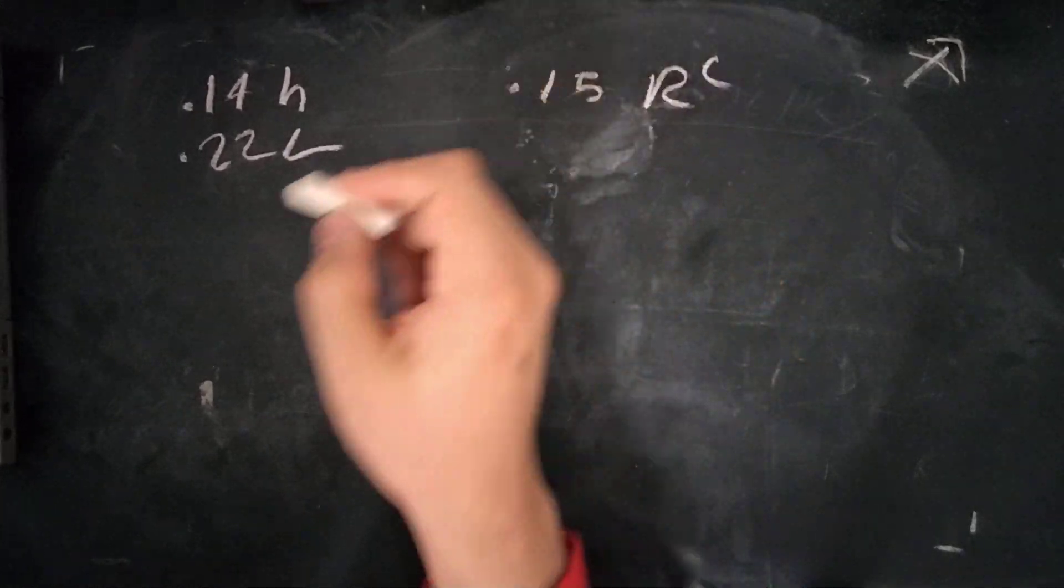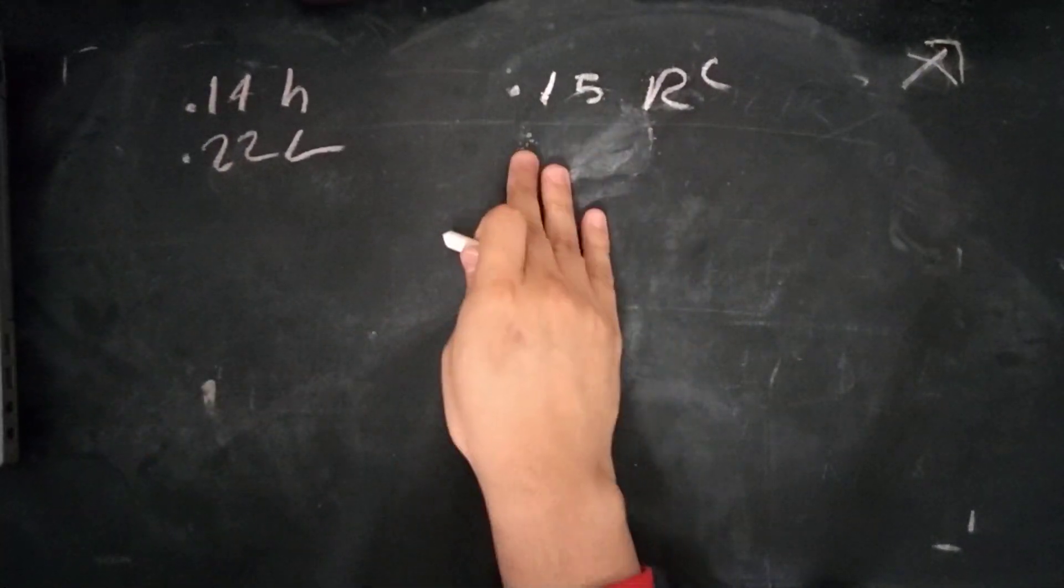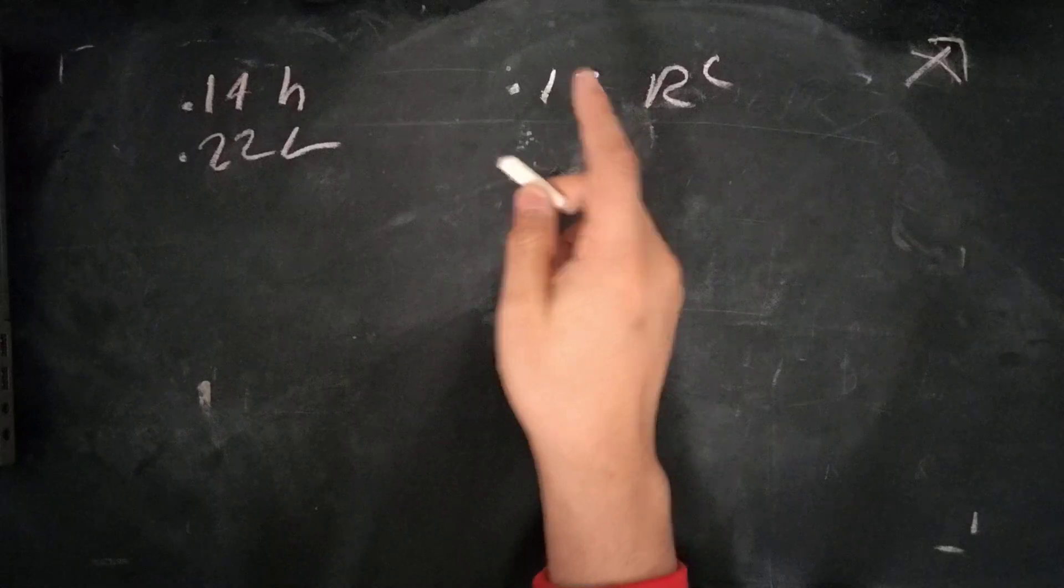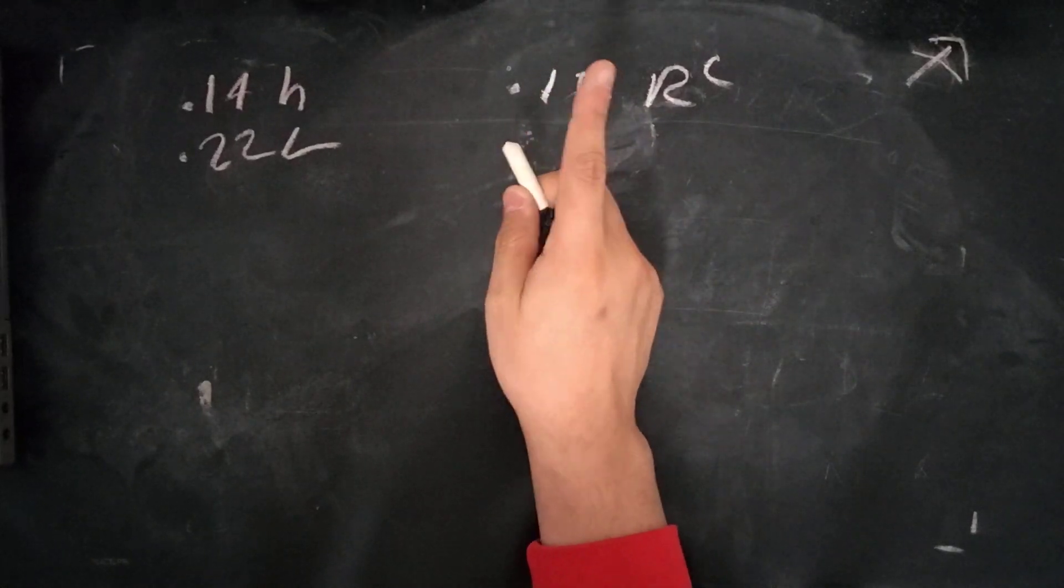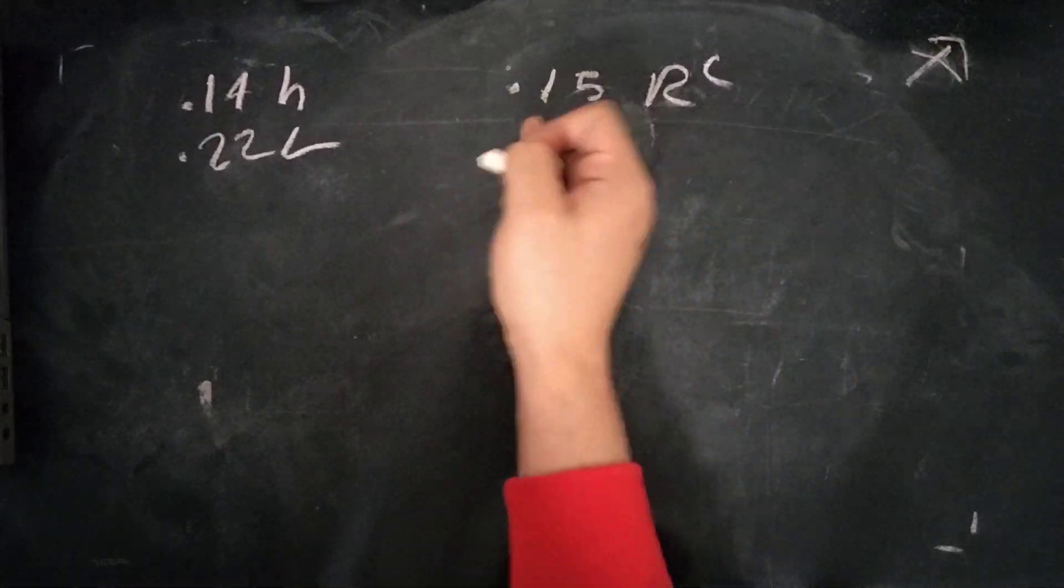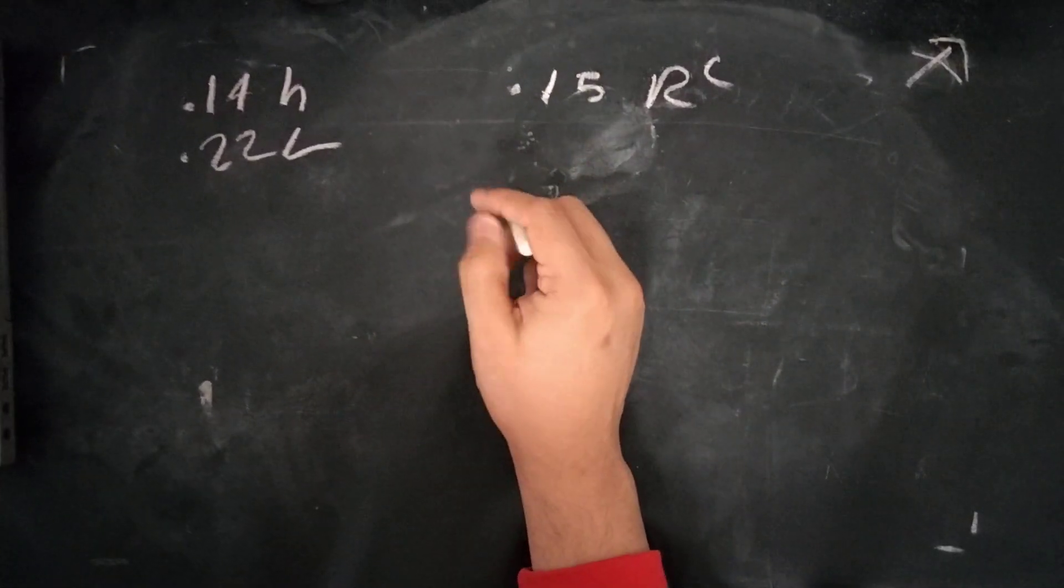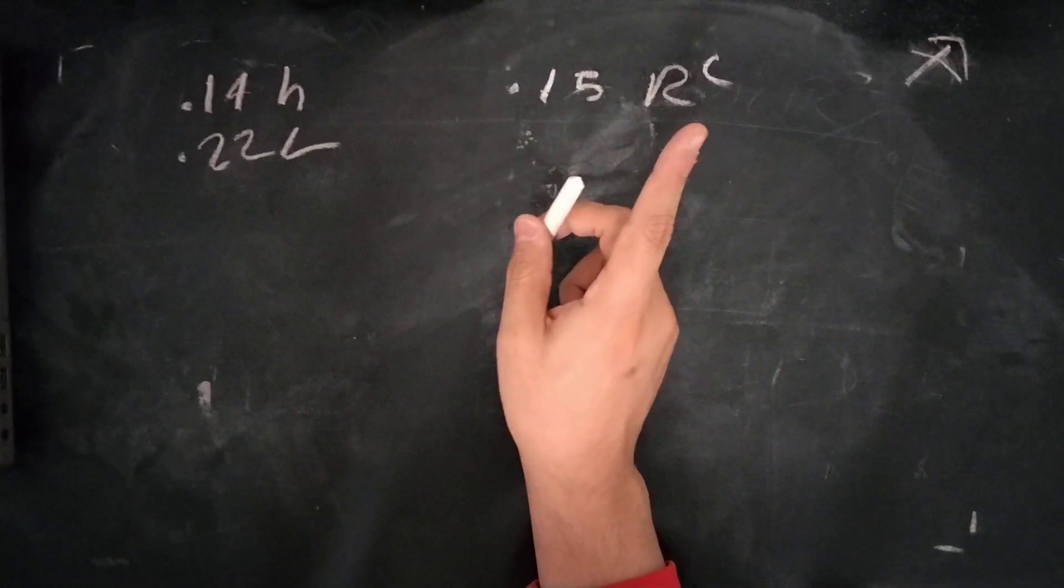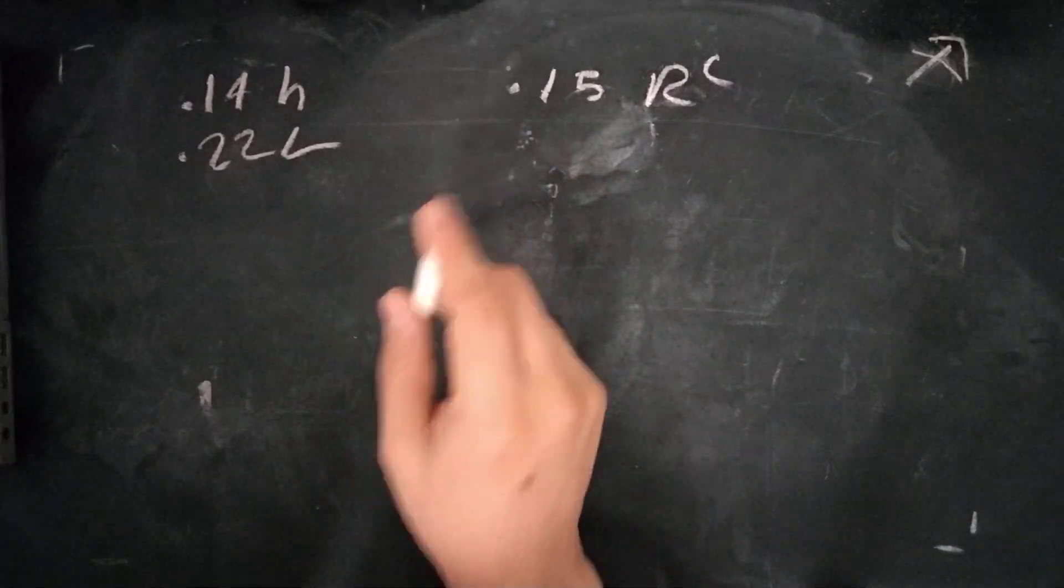We'll write that as R complement. Then we're given these two facts: of those with irregular heartbeats, one-third have high blood pressure. And of those with normal blood pressure, one-eighth have an irregular heartbeat.